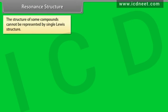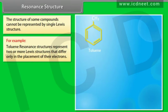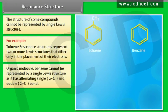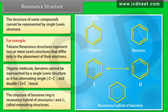Resonance structures: the structure of some compounds cannot be represented by a single Lewis structure — for example, toluene. Resonance structures represent two or more Lewis structures that differ only in the placement of their electrons. Benzene cannot be represented by a single Lewis structure as it has alternating single and double bonds. The structure of the benzene ring is a resonance hybrid of two resonating structures.